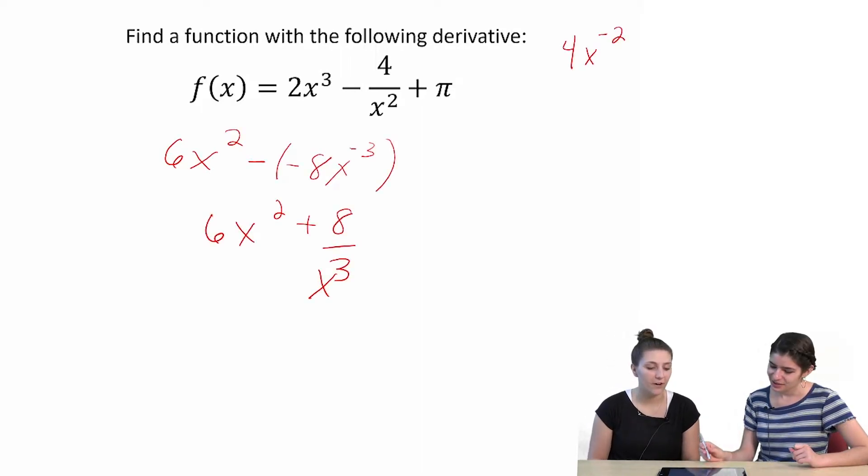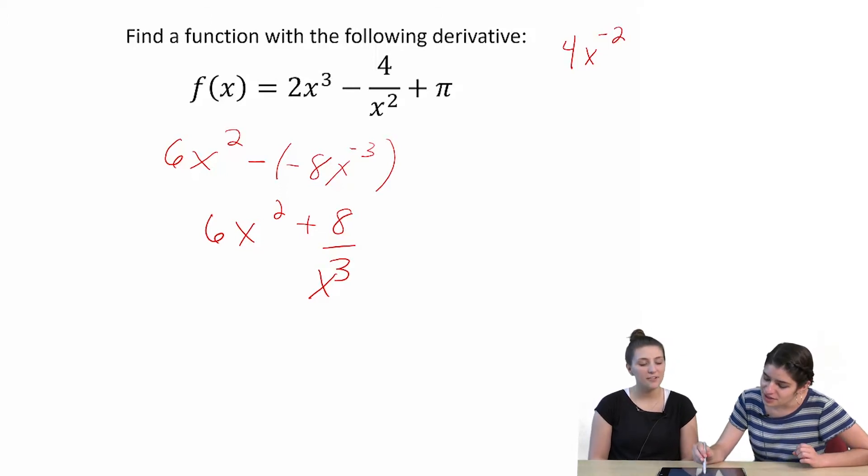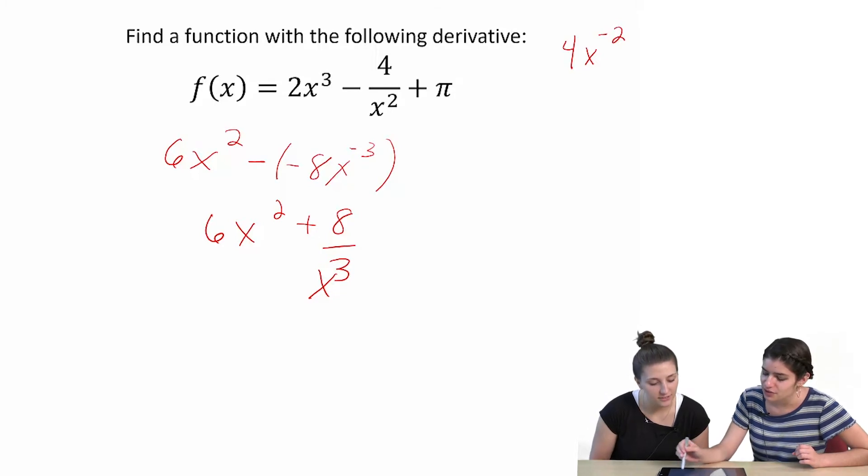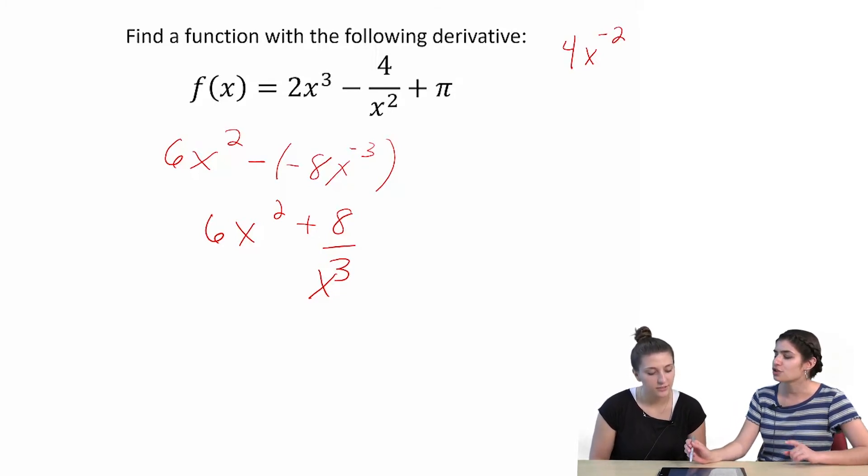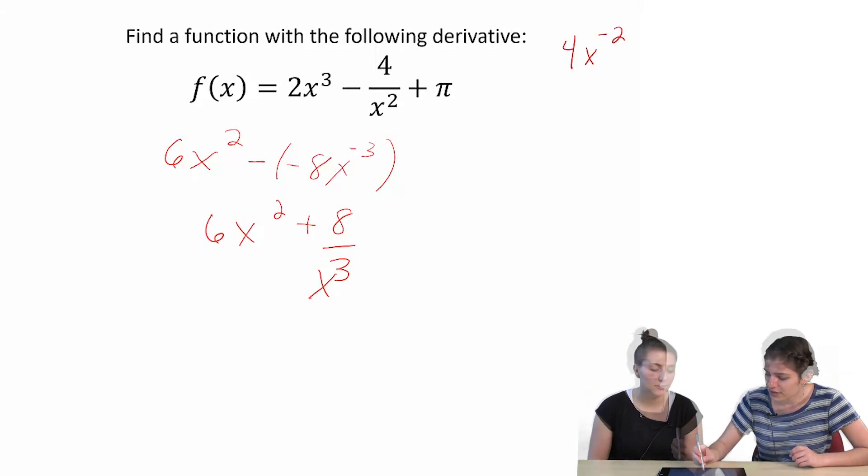Okay, so find a function with the following derivative. I guess we're supposed to go like backwards? Yeah, because if the original was the derivative, then we want to undo it to get what did we have first to get this as our derivative.